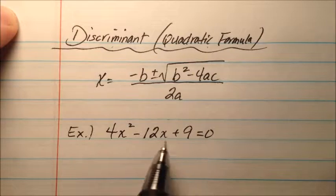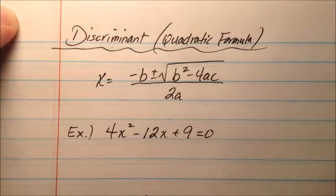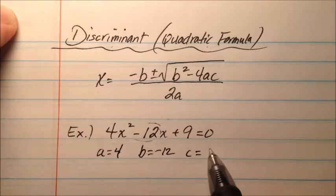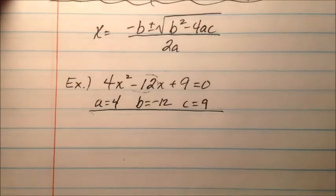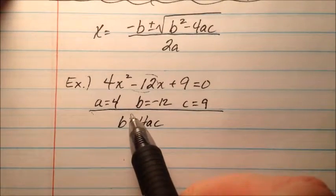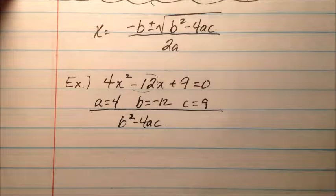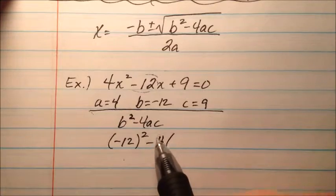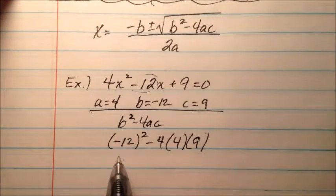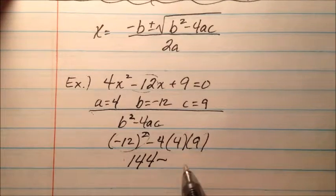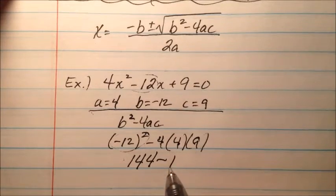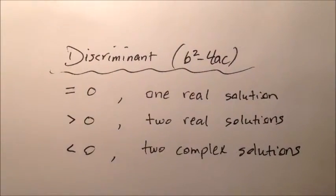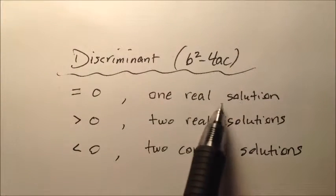In this first example we have 4x squared minus 12x plus 9 equals zero. So a equals 4, b equals negative 12, and c equals 9. Plugging into b squared minus 4ac: negative 12 squared minus 4 times 4 times 9, which is 144 minus 144, and that equals zero. So the discriminant is zero.